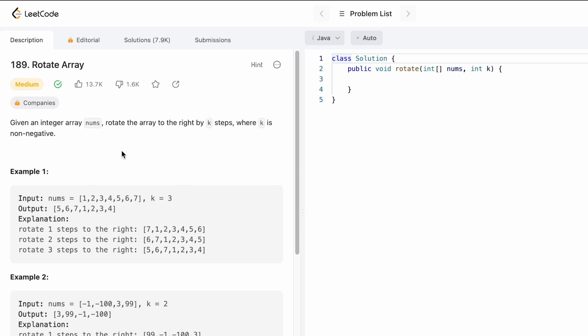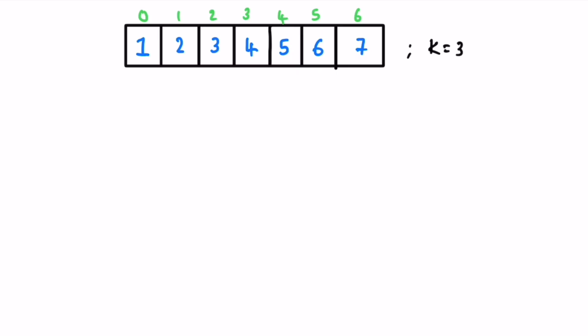Now let's take a look at these examples and see how we can solve this question. I'm going to show you two methods: the first method is using O(n) space and the second method is using O(1) space. I've taken the same example — this is the nums array and k is equal to 3. So the last three elements should be rotated to the right, meaning these three elements will appear in the beginning and these four elements will appear at the end.